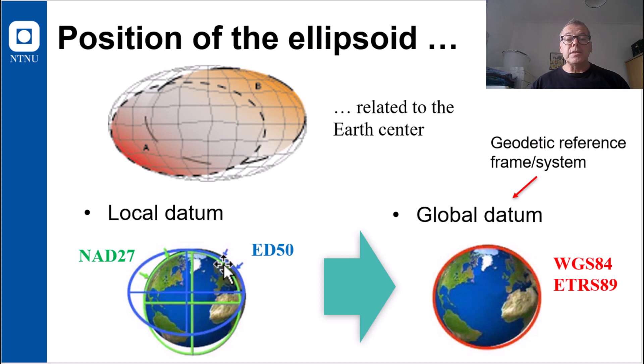But this ellipsoid did not fit well in North America, so they had their own local Datum, such as the North American Datum from 1927. However, with the development of global navigation satellite systems, such as GPS, it was a need for a global datum.